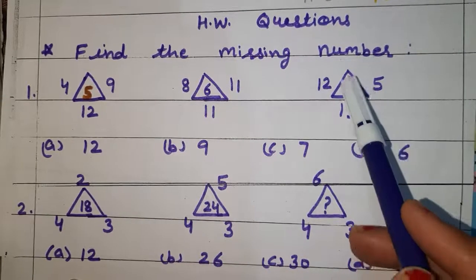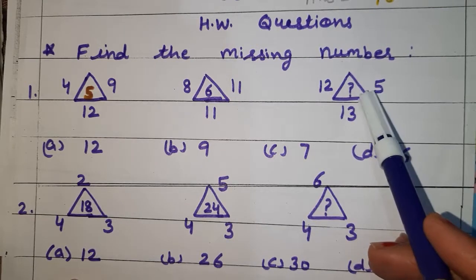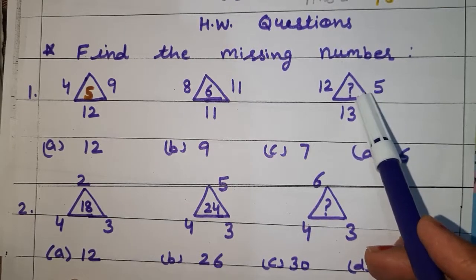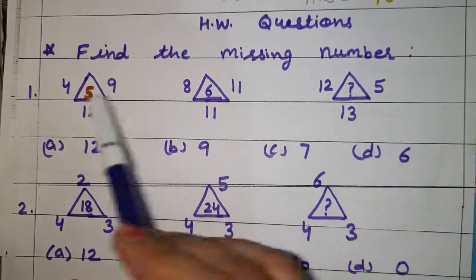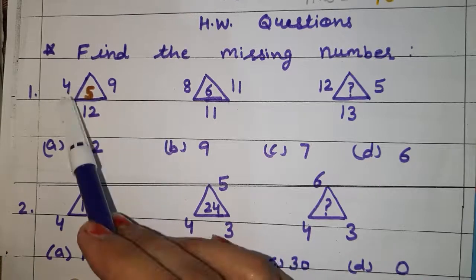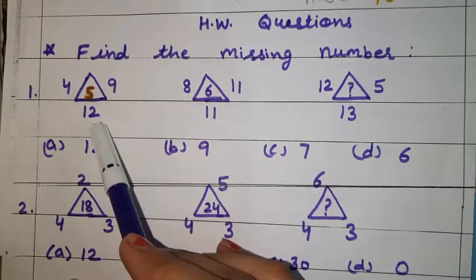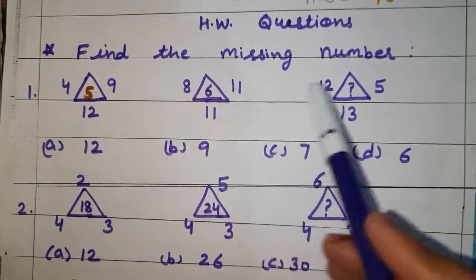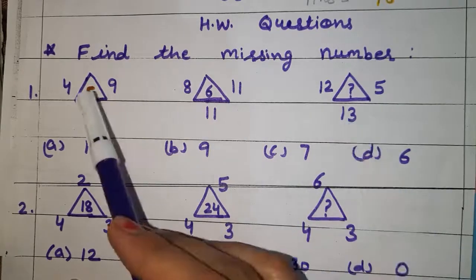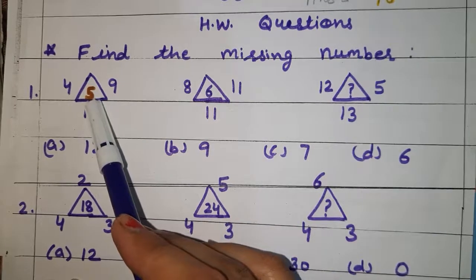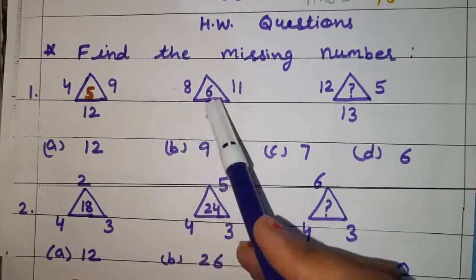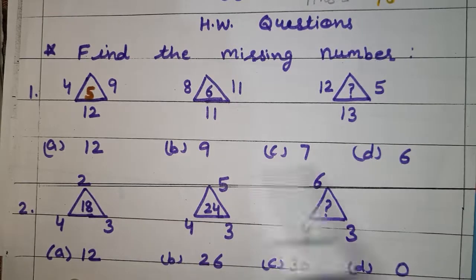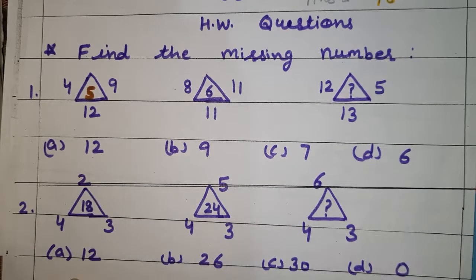We have to find the number that will be written at the center of the triangle. The numbers given are 4, 9, 12, 8, 11, 11, 12, 5, 13. At the center it is 5, here 6, and here a question mark. Choose the correct option.